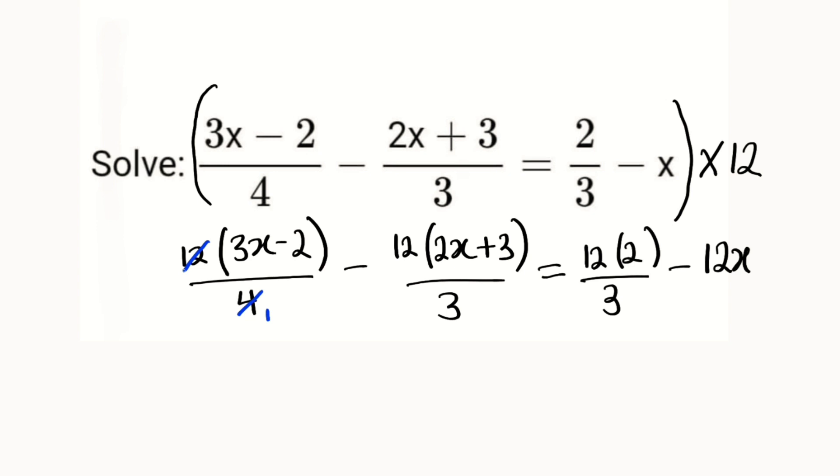To clear the fractions, we know that 4 can go into 12 three times. I will do it step by step. This becomes 3 multiplied by (3x - 2).